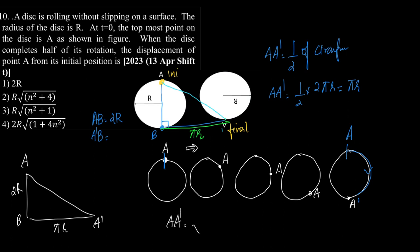Therefore AA dash will be equal to root of 2r the whole square plus πr the whole square, which is equal to r into root of 4 plus π square, which gives us the correct option as option B.